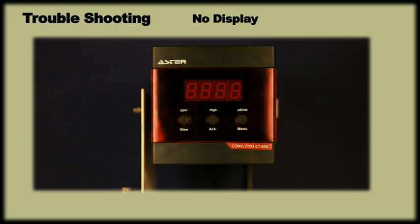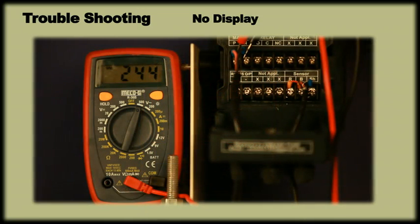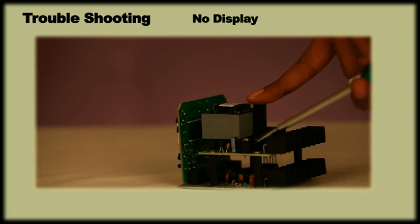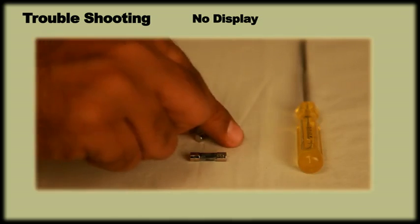Troubleshooting. If the meter shows no display, check the input supply with the help of multimeter and ensure it gets required supply. In case display remains off despite proper supply, open the instrument and change the fuse with a new 630 mA fuse.